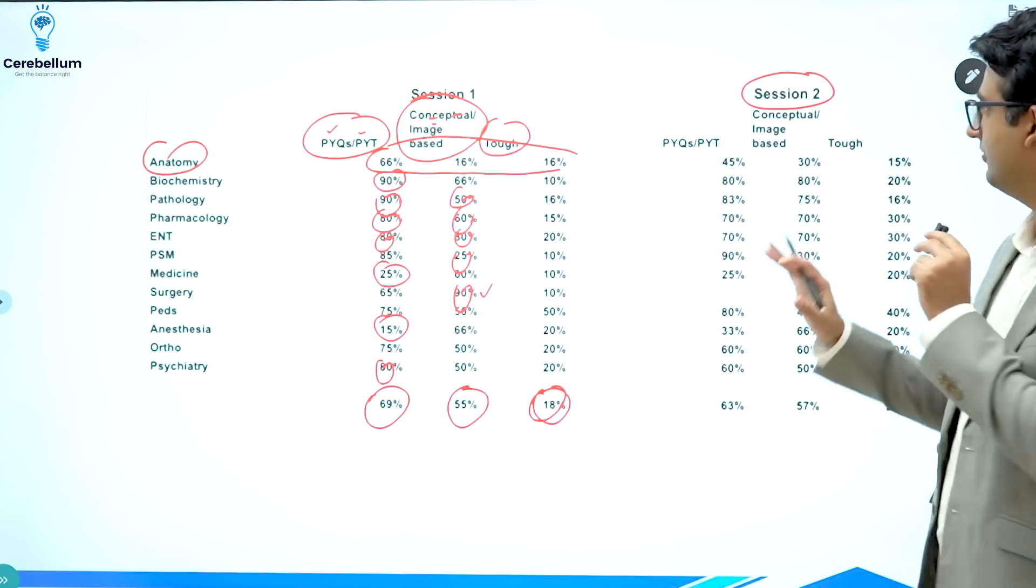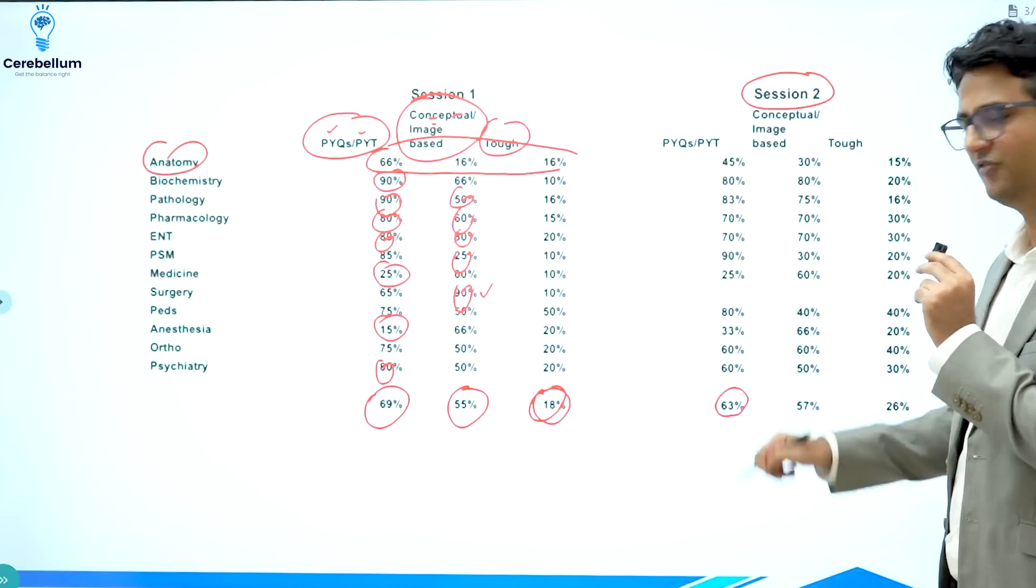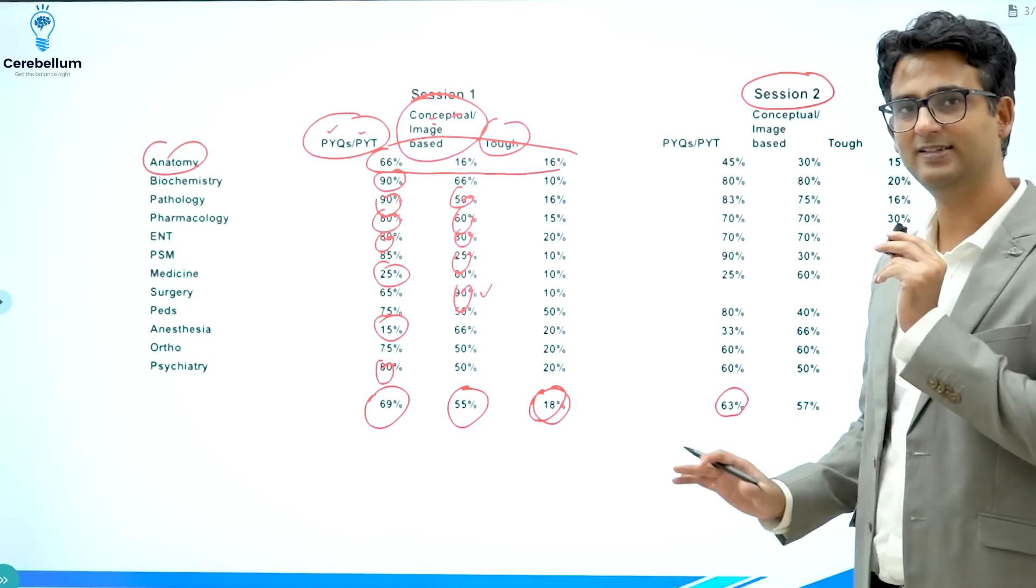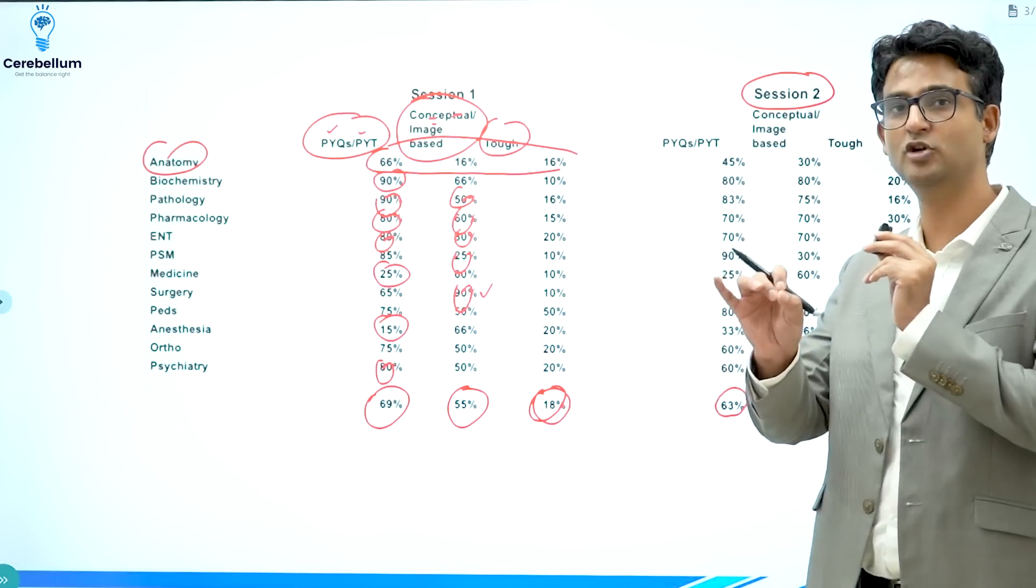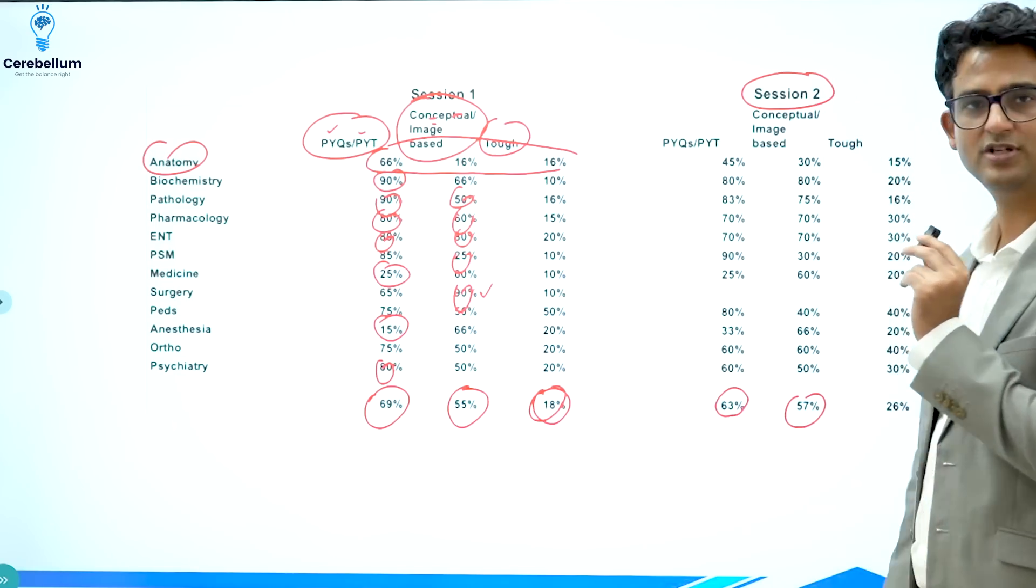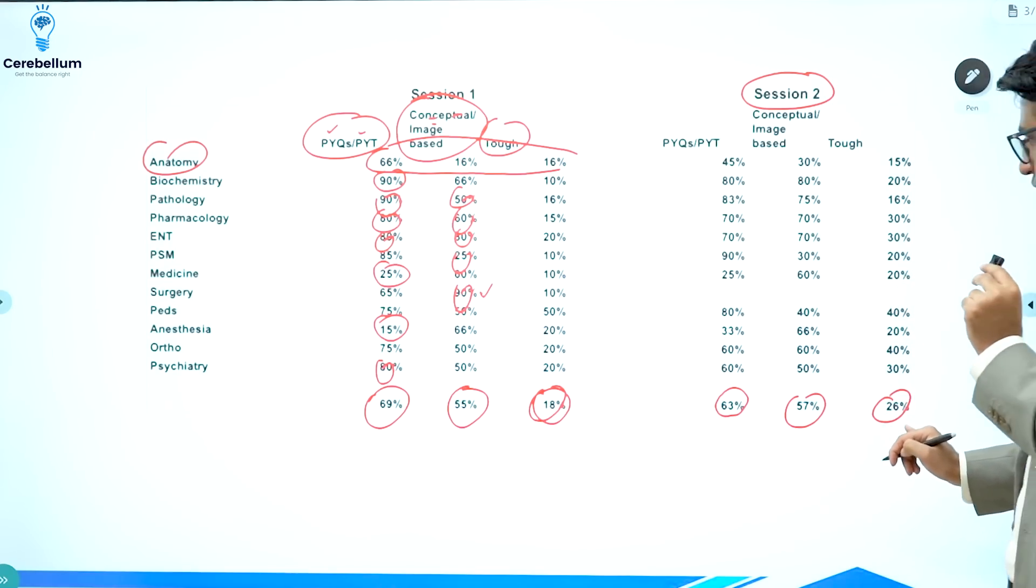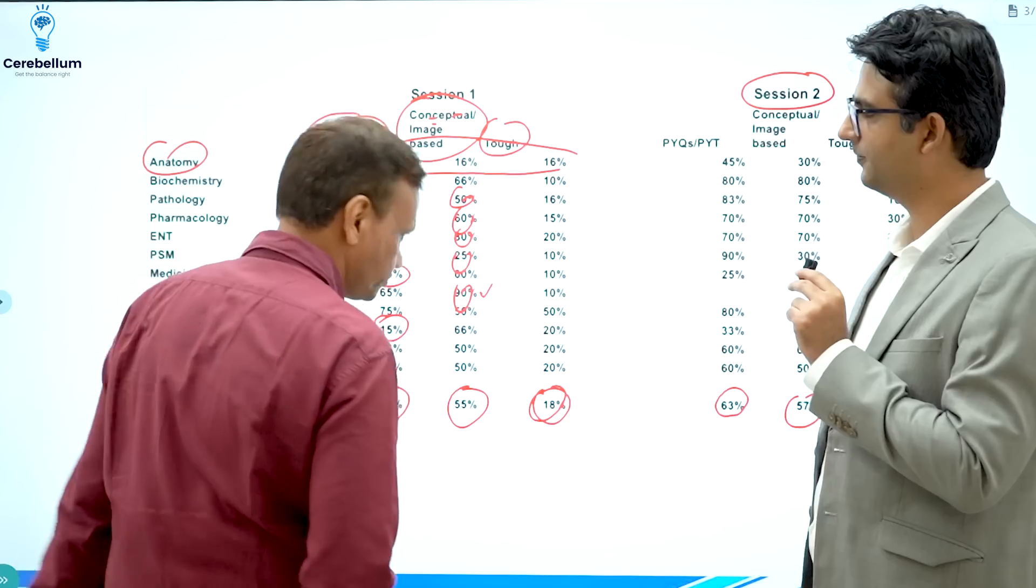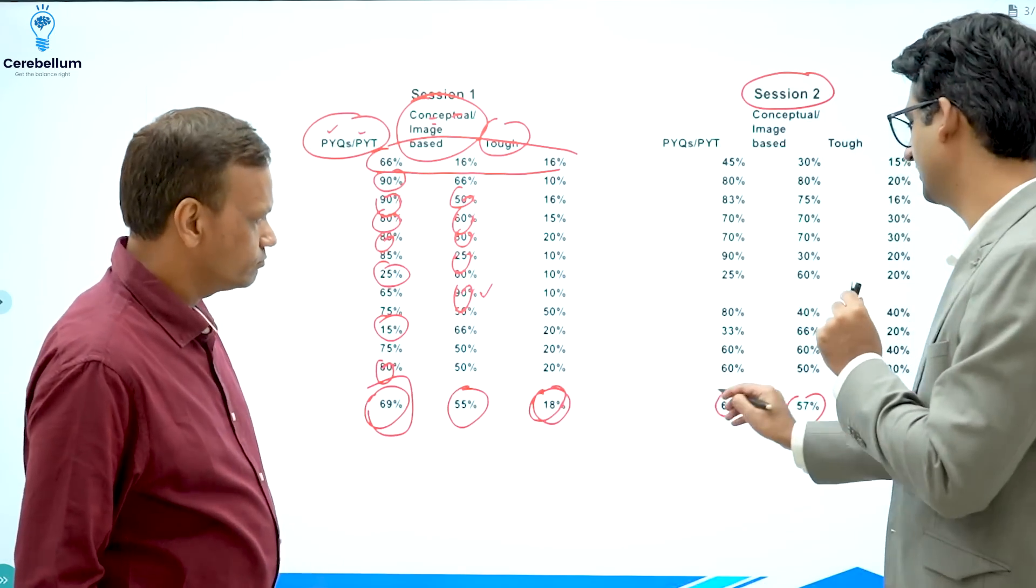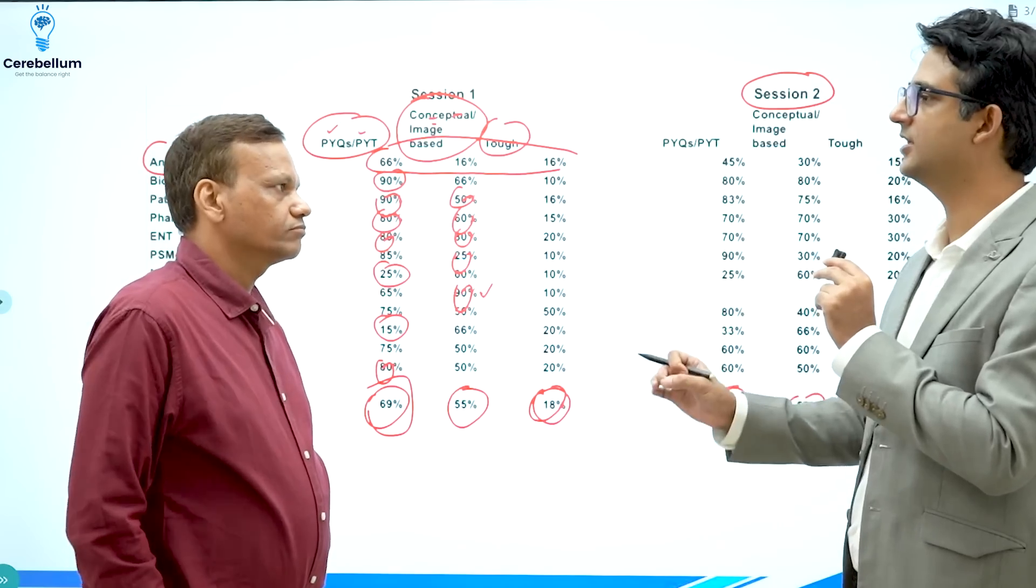The picture changes slightly when we talk about session 2. Overall, the number of PYQs are slightly lesser. It is 63%. And I must say that out of the 63% again, the majority are PYTs. The number of conceptual questions is around the same. The number of tougher questions is definitely more, almost a quarter. So Gobind sir, my first question to you, when you look at this data and when you look at your pharma questions, are PYQs and PYTs now irrelevant?